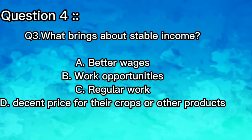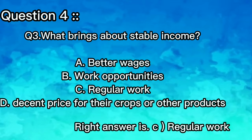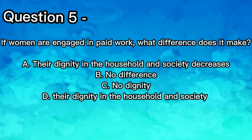Question 4: What brings about stable income? A) Better wage work opportunities, B) Regular work, C) Decent price for their crops or other products. The right answer is C — regular work.